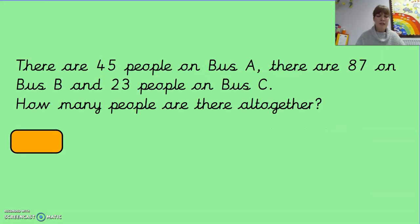Okay, last question. You might come across something like this. So there are 45 people on bus A, there are 87 on bus B and 23 on bus C. How many people are there? Now, all together tells me that I need to add them. Okay, I'm just going to underline all together.